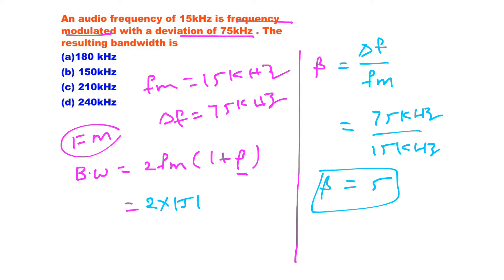Now substitute all the data here: 2 into fm is 15 kHz into 1 plus 5. That's equal to 2 into 15 kHz, which results 180 kHz.